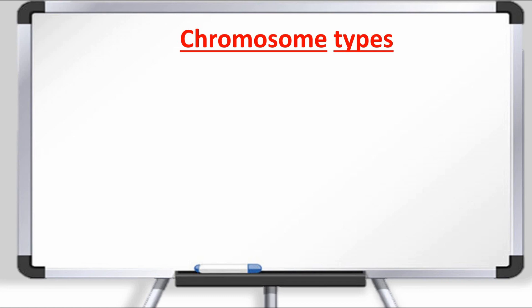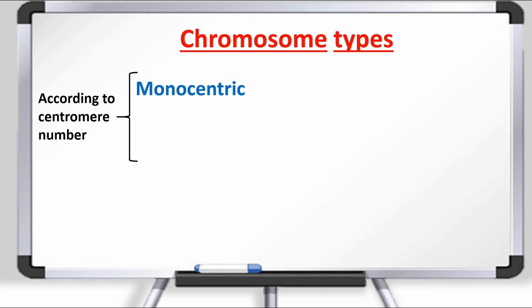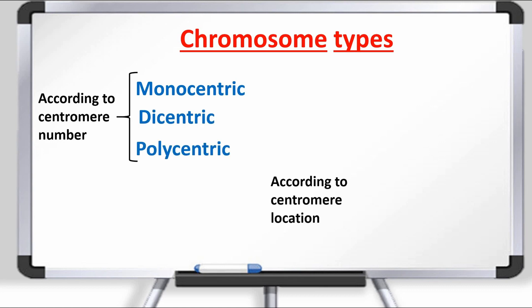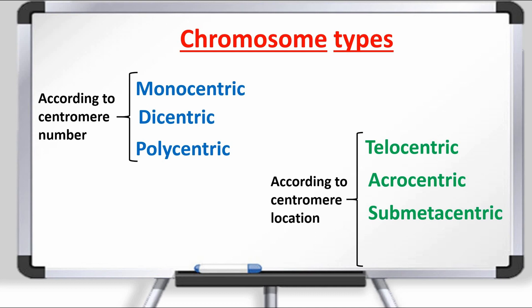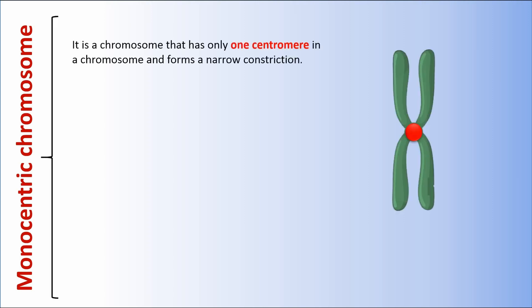According to centromere number, chromosomes can be divided into three types: monocentric, dicentric, and polycentric. According to centromere location, chromosomes can be divided into five types: telocentric, acrocentric, submetacentric, and metacentric. A monocentric chromosome has only one centromere and forms a narrow constriction. It is the most common structure and contains highly repetitive DNA in plants and animals.